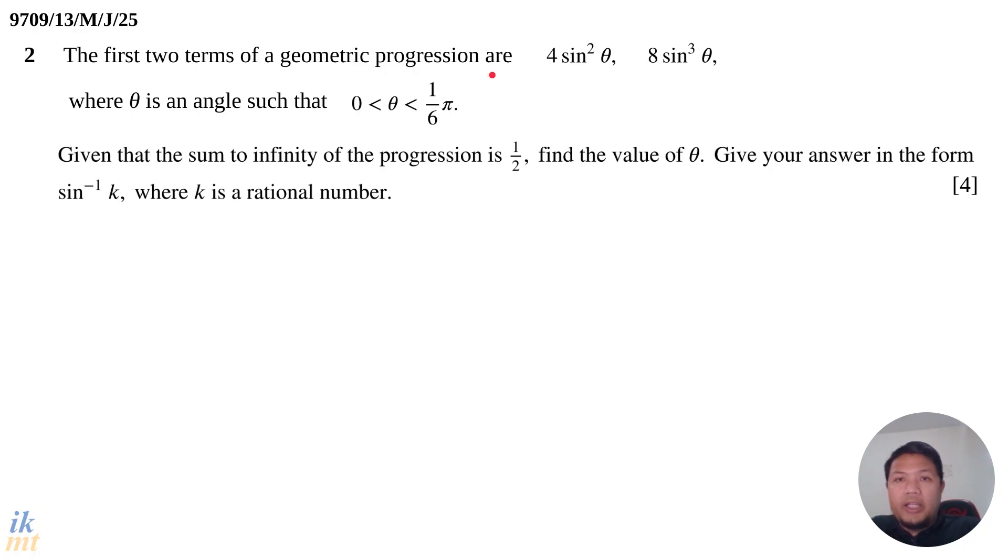We know that in a geometric progression, the first term is called a. So a = 4 sin²θ. The second term is ar, which equals 8 sin³θ, where r is the common ratio. To find r, we take the second term divided by the first term. When we simplify, we get r = 2 sin θ.